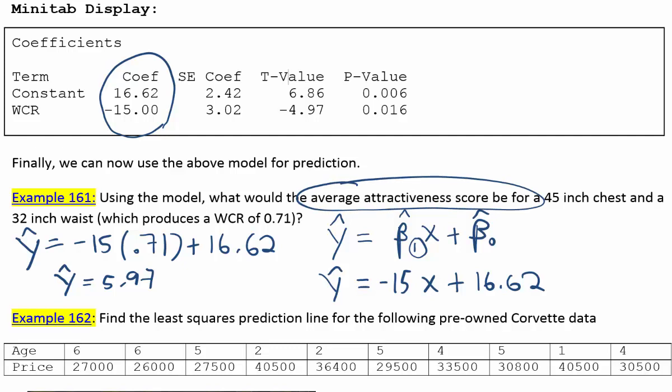So that's not the attractiveness score given to an individual with that waist-to-chest ratio. What that actually represents is the average score that all women theoretically would give to men who have that waist-to-chest ratio. So some women would rate that higher, some would rate it lower, but approximately the average would be about 5.97. That's what the model is telling us.